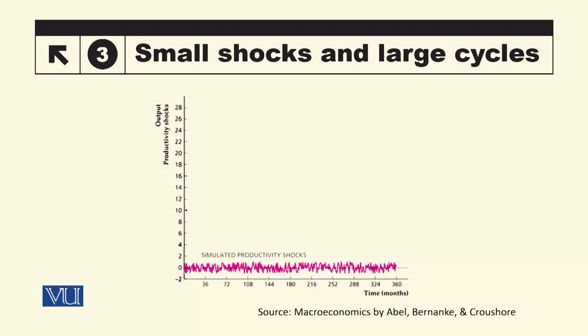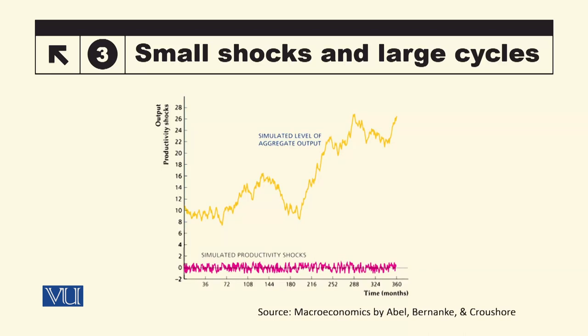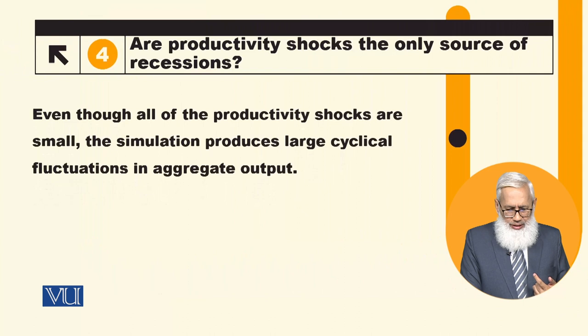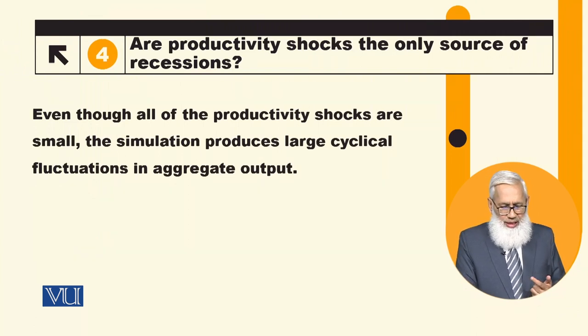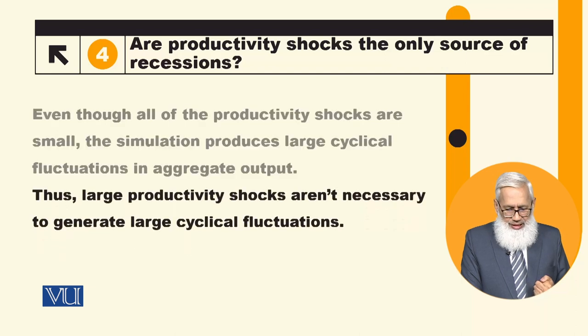These are small shocks, but when we use the simple RBC model simulation, the output fluctuations are large — shown by the yellow graph. So even though all of the productivity shocks are small, the simulation produces large cyclical fluctuations in aggregate output. Thus, large productivity shocks are not necessary to generate large cyclical fluctuations.